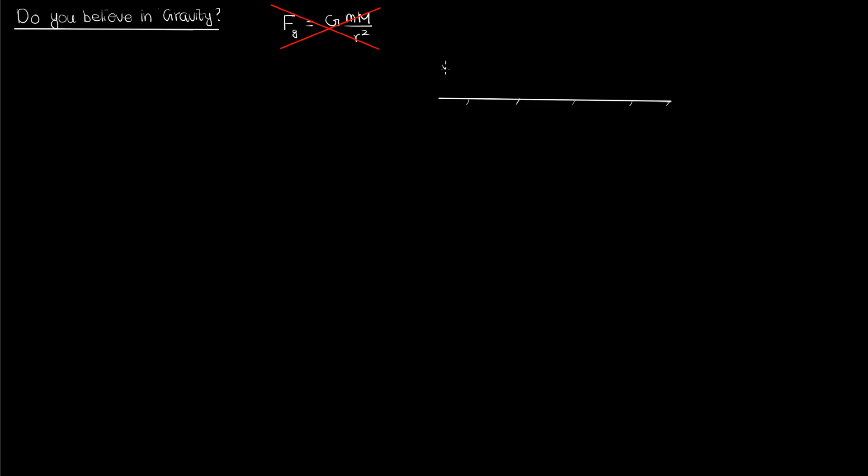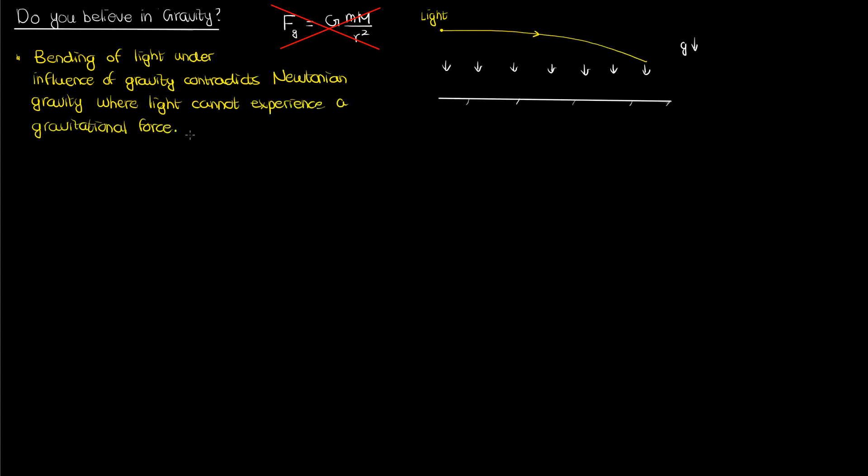In the last video we used the equivalence principle to show that light bends under the influence of gravity, with a trajectory that looks something like this in a uniform gravitational field. I also argued in that last video that this bending of light contradicts Newtonian gravity, because light is massless and therefore should not experience any force that causes it to change direction and bend. And because of this contradiction, we need a new way to think about gravity, which brings us to this video.